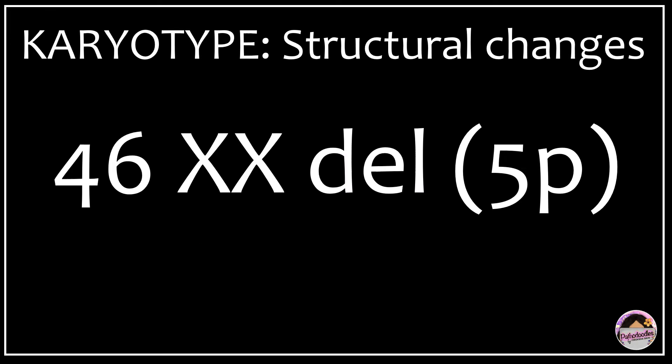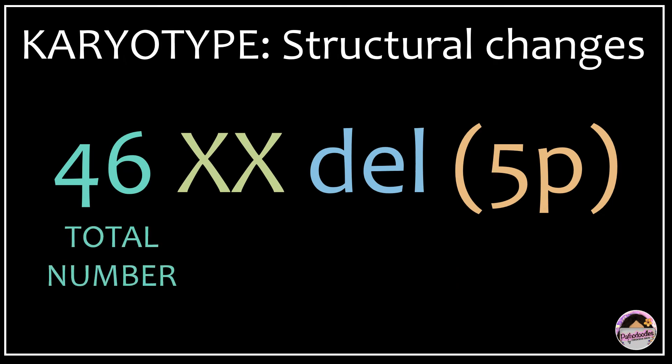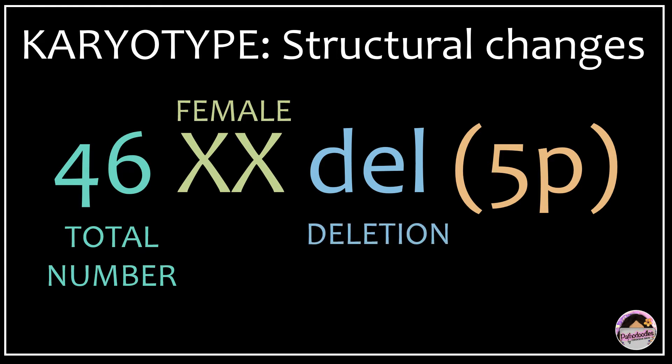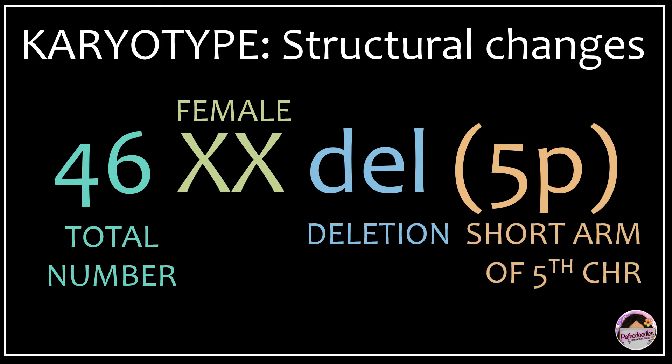Now let's take it a step further. Look at 46,XX,del(5p). This means the chromosome number is fine, so this is not a numerical issue — it's a structural issue. Total chromosomes is 46, normal female patient, who has a deletion in the karyotype. Which deletion? The short arm of the 5th chromosome is deleted. The diagnosis is Cri-du-chat syndrome.